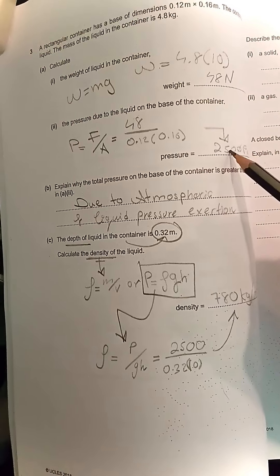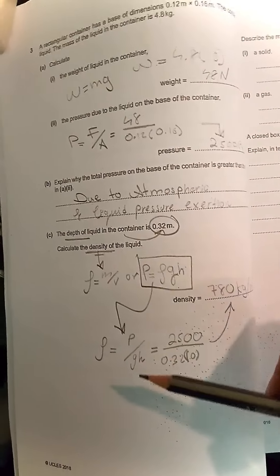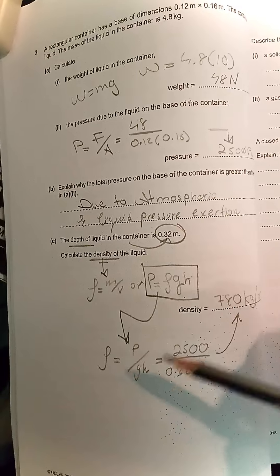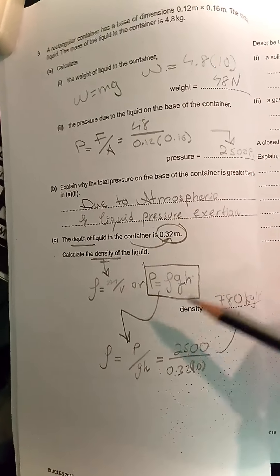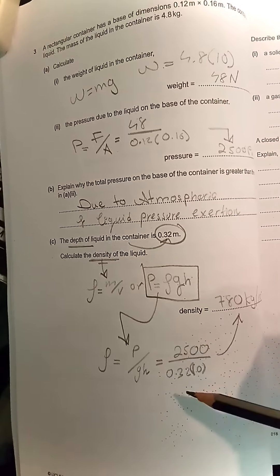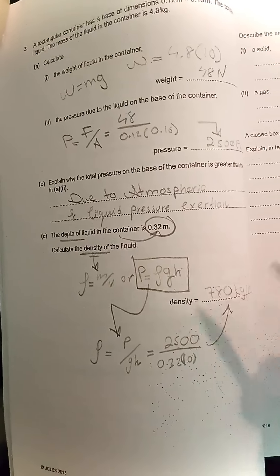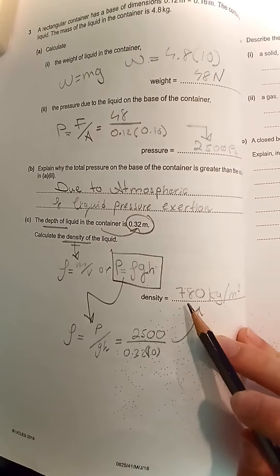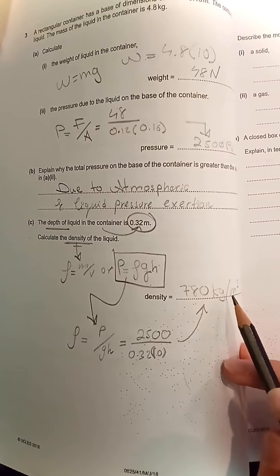The pressure we found is 2500 Pascals. The gravitational field is 10, and the height is 0.32 meters. Substituting the values: 2500 divided by 0.32 times 10 equals 780 kilograms per meter cubed.